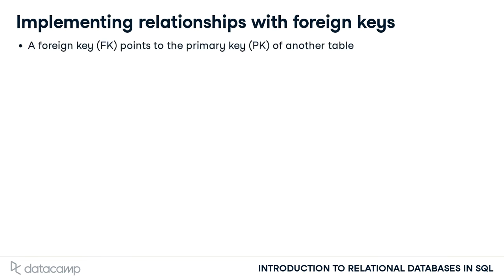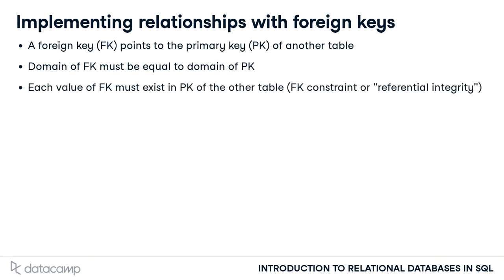Foreign keys are designated columns that point to a primary key of another table. There are some restrictions for foreign keys. First, the domain and the data type must be the same as the one of the primary key. Secondly, only foreign key values are allowed that exist as values in the primary key of the reference table. This is the actual foreign key constraint, also called referential integrity. You'll dig into referential integrity at the end of this chapter. Lastly, a foreign key is not necessarily an actual key, because duplicates and null values are allowed.